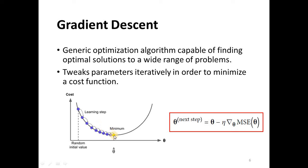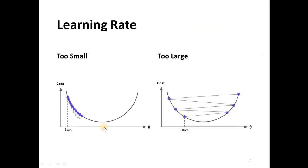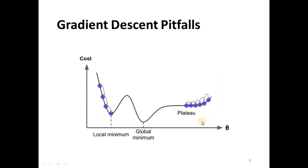The learning rate should be picked carefully. It should not be too small, so that we do not take a long time to reach the solution, and it should not be too large, otherwise we will not converge to the solution.